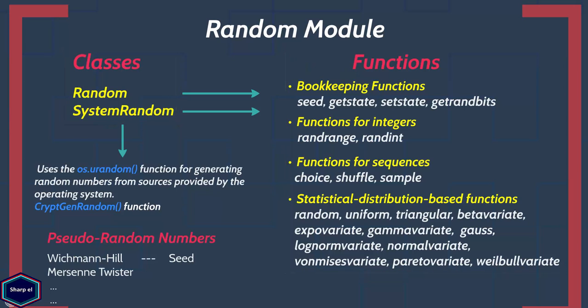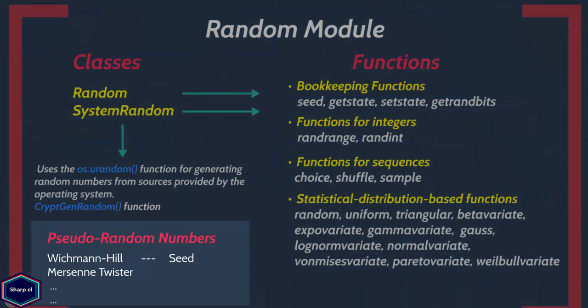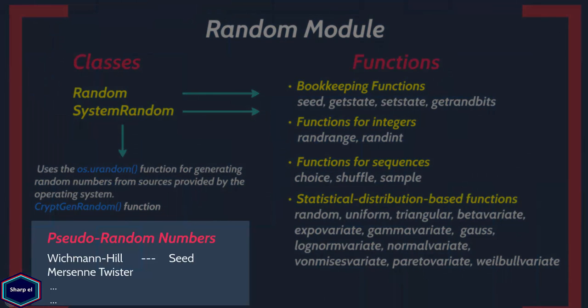So what is the difference between random numbers and pseudo-random numbers? Pseudo-random numbers are generated by computers using an algorithm and a seed, which is also known as the starting point, which is either chosen by the user or sometimes it is the system clock.